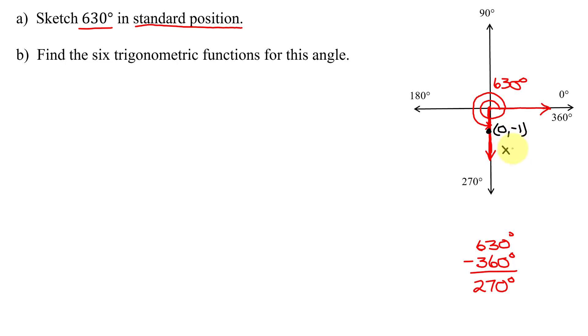So for this point, I know x is 0, y is negative 1. And then to find r, I know r squared equals x squared plus y squared. So r squared equals 0 squared plus negative 1 squared. So r squared is 0 plus 1, which is 1, so r is the positive square root of 1. Because remember, r is always positive, so r equals positive 1.